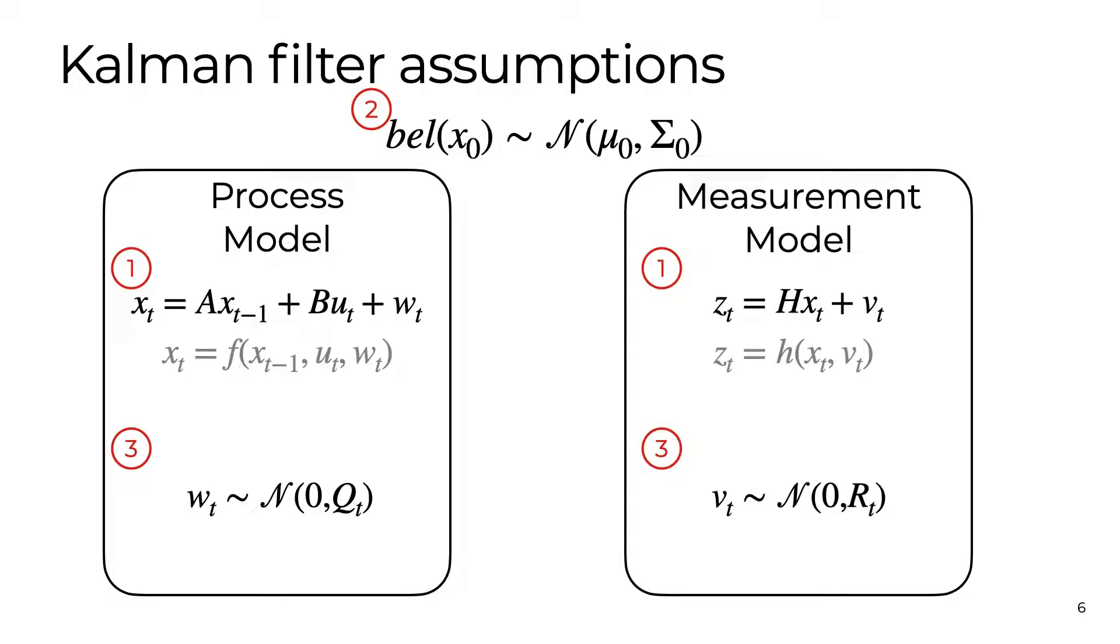Here are those three assumptions written in math. We'll assume that the initial state is parameterized by some mean vector mu with a covariance matrix sigma. The process and measurement model noise variables are both Gaussians with zero mean and diagonal covariance matrices Q and R respectively.